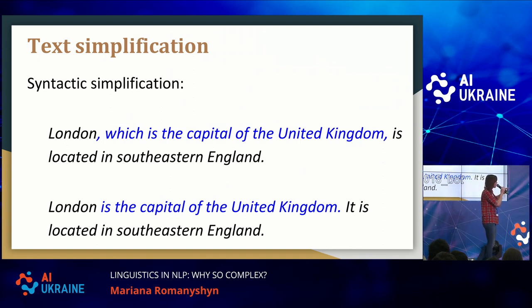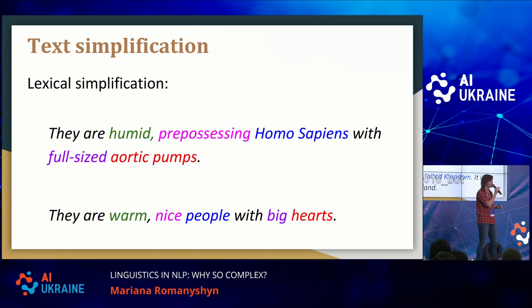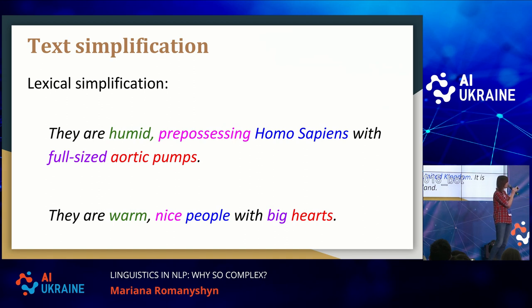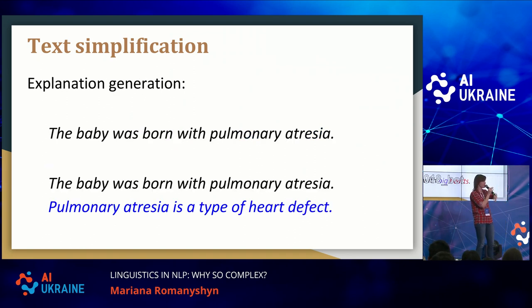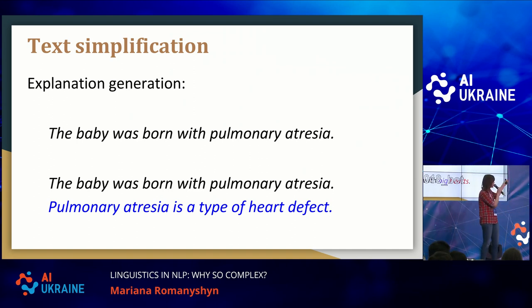Syntactic simplification is when you take a really complex sentence like "London, which is the capital of the United Kingdom, is located in Southeast England" and you break it into multiple sentences: "London is the capital of the United Kingdom" and "London is located in Southeast England." Lexical simplification is simplifying complex vocabulary — words and phrases — to simpler words, while preserving the meaning and grammaticality of the sentence. This is what we will look more closely into today.